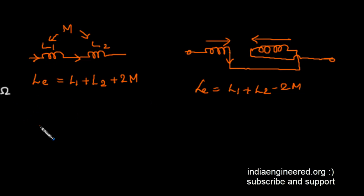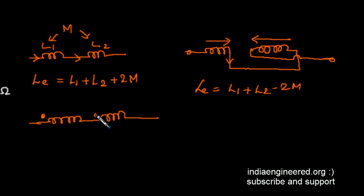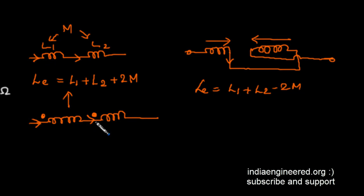To easily represent this kind of circuit we will use dot notation. We have a dotted terminal here and another dotted terminal here. The current is entering both dots, which means it is in an aiding connection — the current enters the dotted terminal in both coils, so the mutual inductance is additive and enhances the magnetic field.